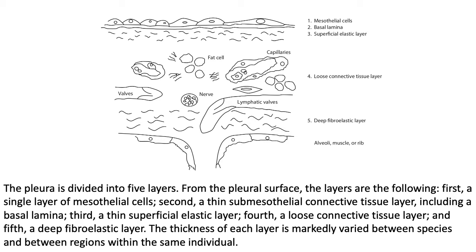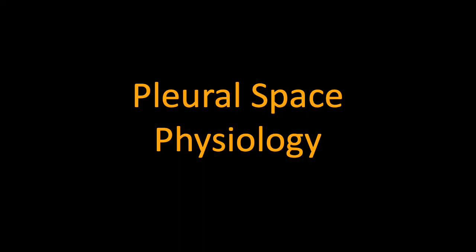What is really important to understand is that accumulations within the pleural space occur because you have a capillary network within the loose connective tissue. You also have pleuritic chest pain which comes from the nervous system. Now let's look at the physiology of how fluid actually passes in and out.